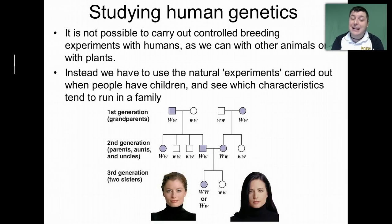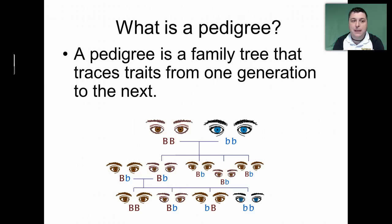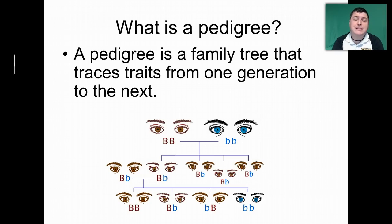Instead, we have to use the natural experiments that happen when people have children and see what characteristics tend to run in families. For example, this is a pedigree for the inheritance of widow's peak — the hairline. We have a widow's peak and a straight hairline, and we can see how that widow's peak gets passed down to this young lady here. Essentially, a pedigree is a family tree that shows the inheritance of a trait from one generation to the next.